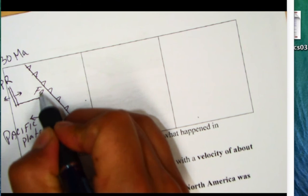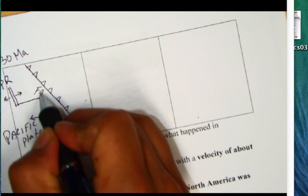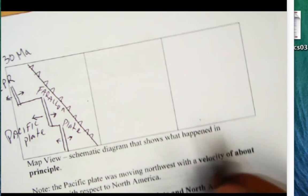And the plate that's being subducted here is a Farallon plate. So the Farallon plate is going into the trench here and that's our trench.